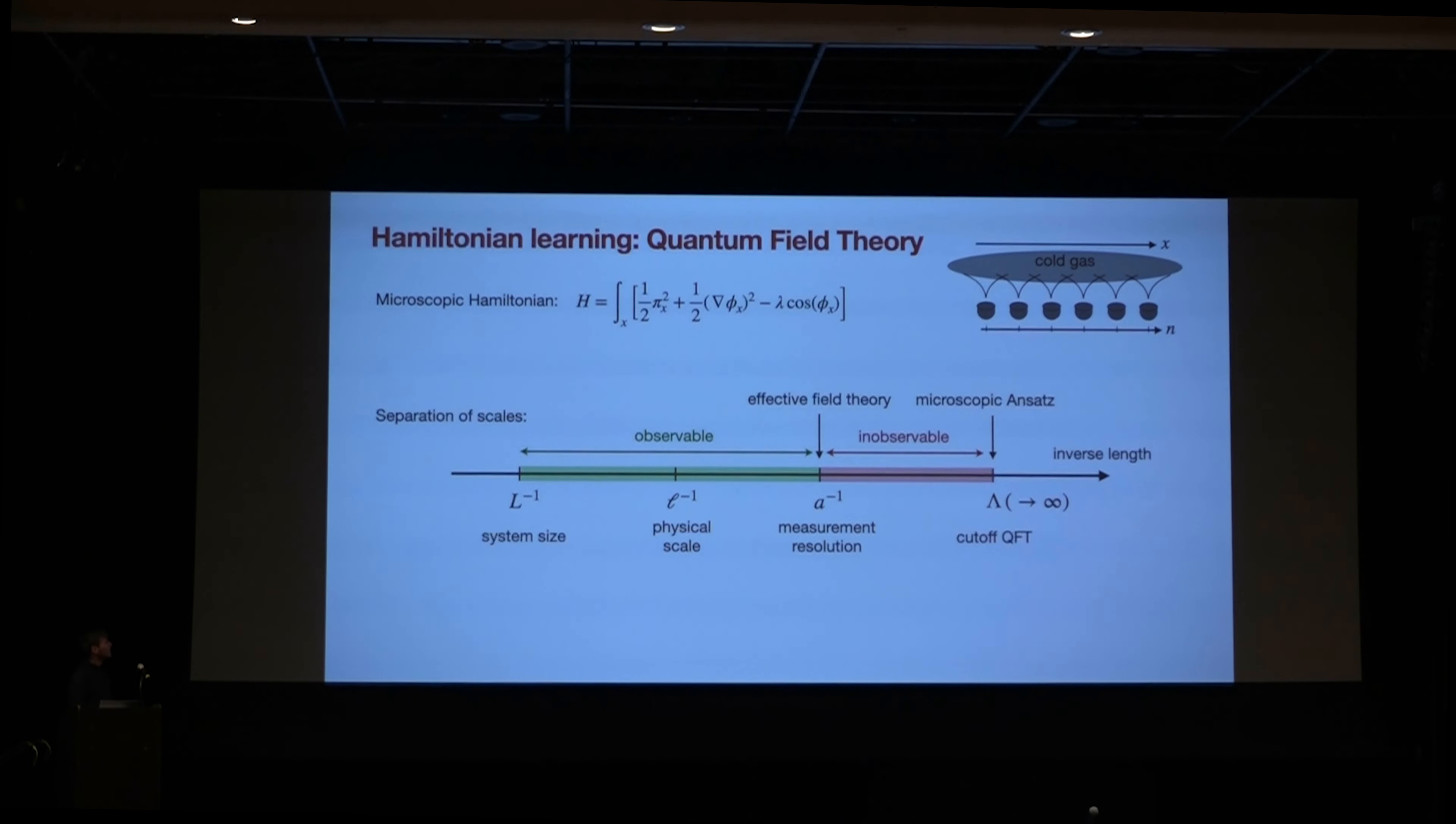And then what the experiment does, and the measurement does, is it introduces this additional scale, which is the measurement resolution. And it kind of separates these scales into inaccessible ones, which are the ones at the right, and the ones we can access. So the problem that we face is here: if I choose a local ansatz of the field theory, it is over here at short distances. But what we can actually learn is only information at the measurement scale over here. So what we're doing is we're kind of bridging the gap between these two.